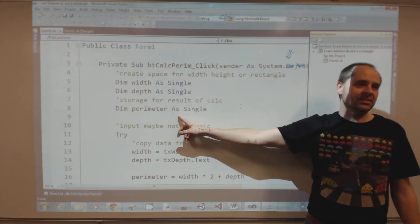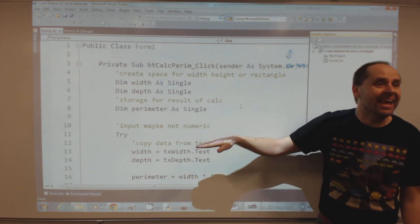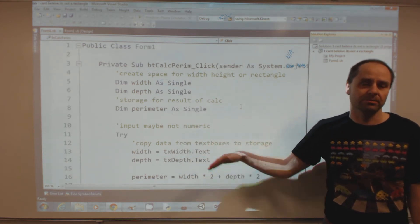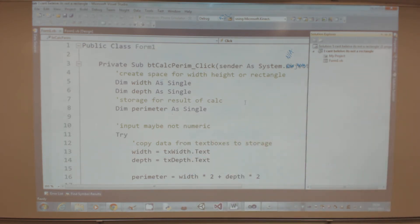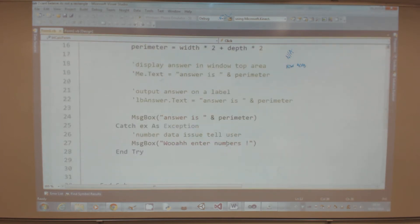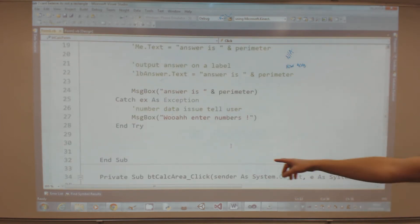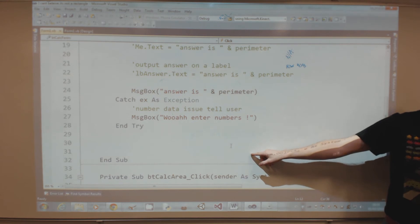What that means is the only code that can access these values is the code in the subroutine, so they're local. When we get down to the bottom of the code to this 'End Sub' bit, those values are destroyed. They no longer exist. That's what we mean by local variables.